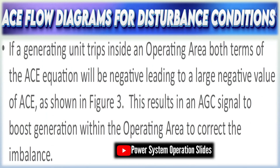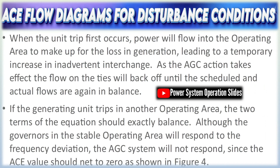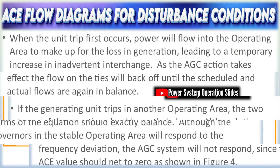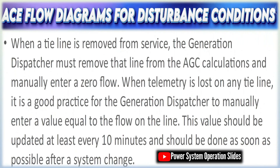Under disturbance conditions — such as a sudden loss of generation or an unexpected load surge — ACE flow diagrams help visualize the sequence of events and control responses. Step 1: A disturbance occurs, leading to an immediate frequency deviation. Step 2: Measurements of frequency and tie-line flows are fed into the AGC. Step 3: The ACE signal is computed as a combination of the power interchange error and the weighted frequency deviation. Step 4: The AGC controller processes this signal through feedback loops — often using PI (proportional-integral) control — to generate set-point adjustments. Step 5: These adjustments are sent to individual generating units. Step 6: The responding units modify their outputs over a defined ramp period, thereby reducing ACE towards zero and restoring nominal operation. Such flow diagrams are essential tools for operators in analyzing the transient response and verifying that the control strategy meets reliability criteria.